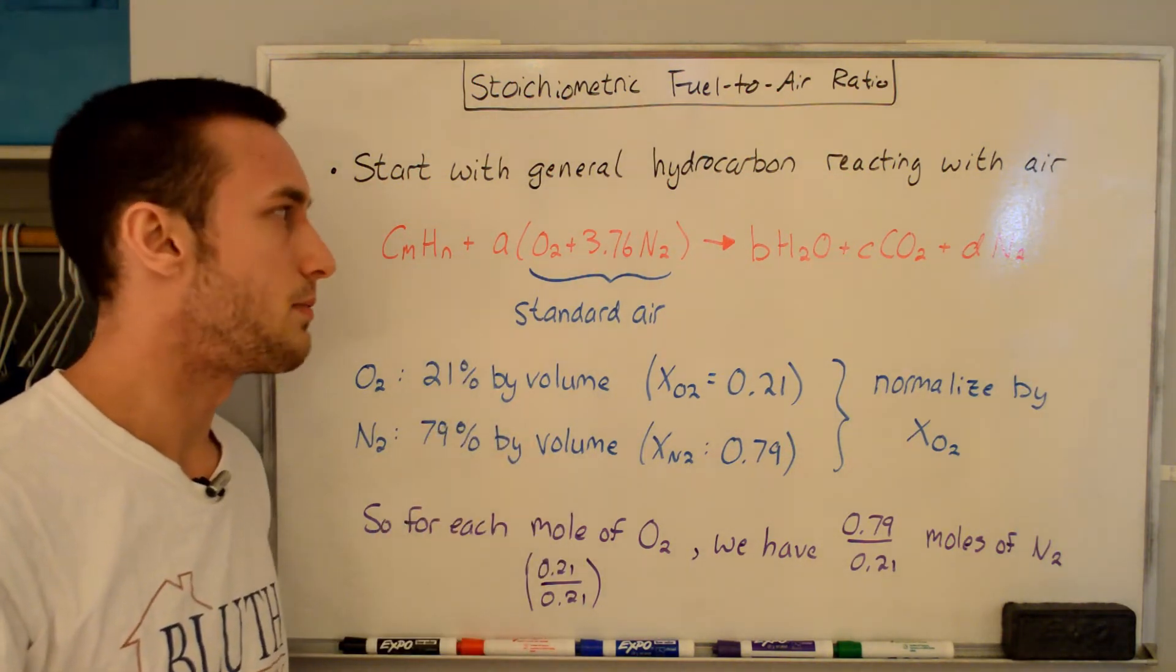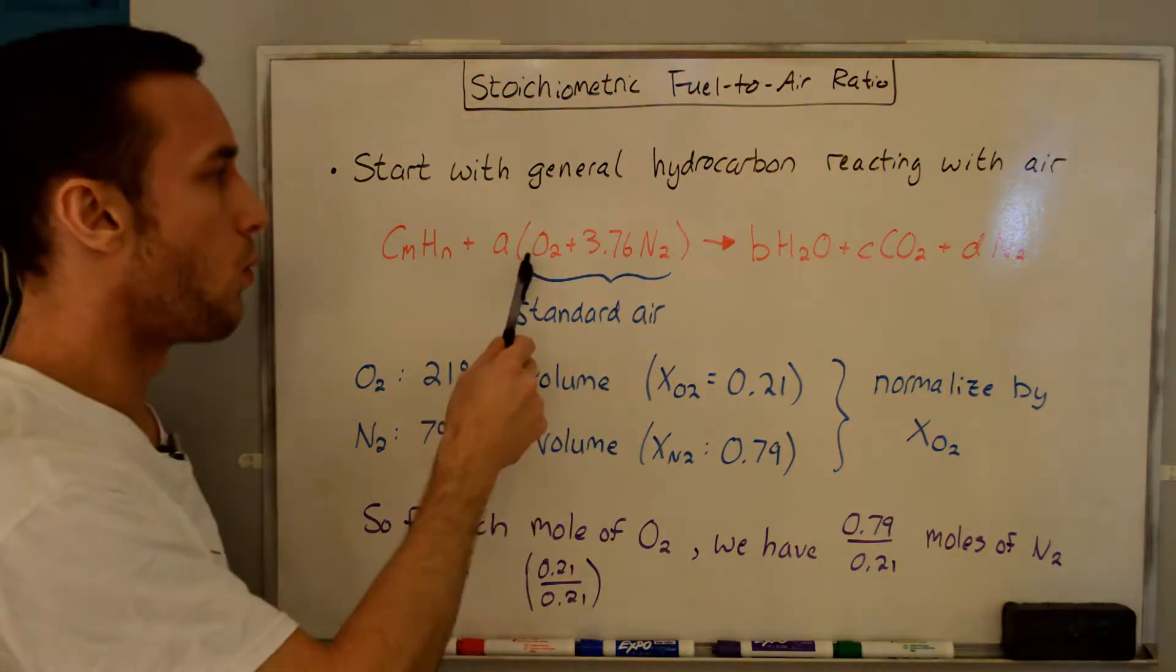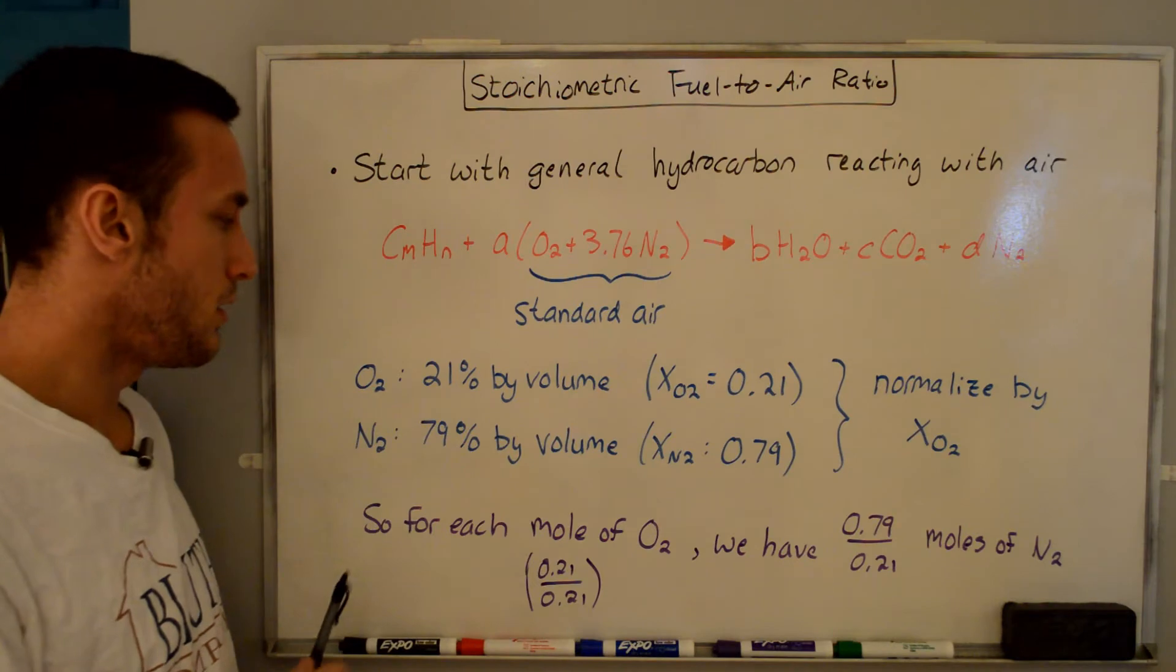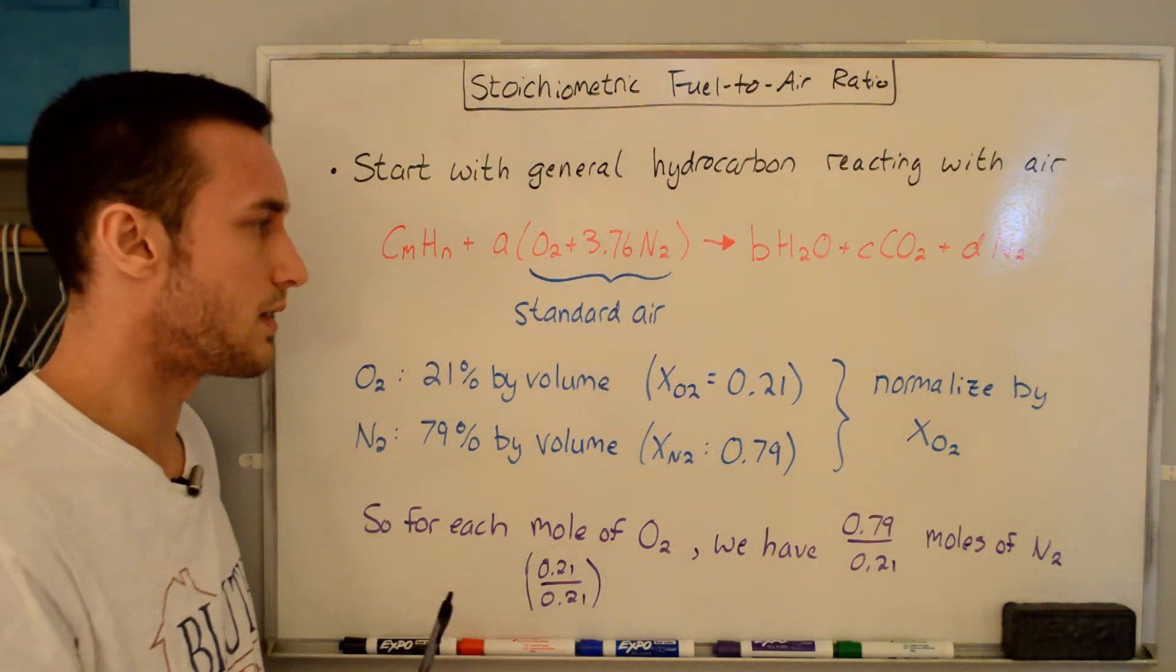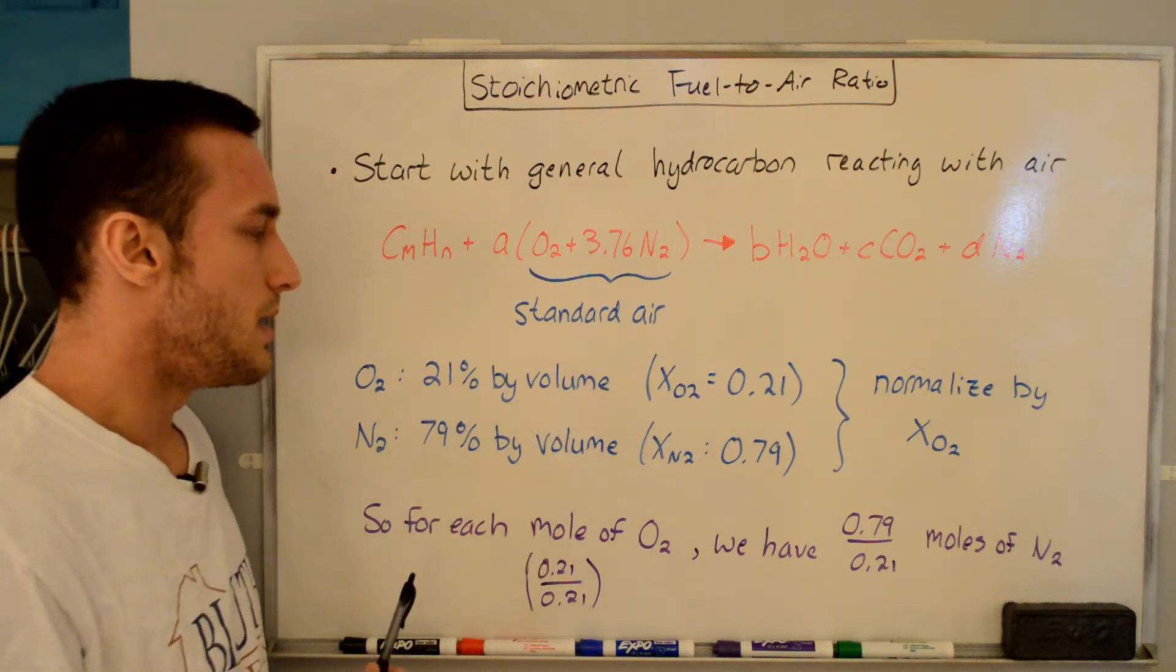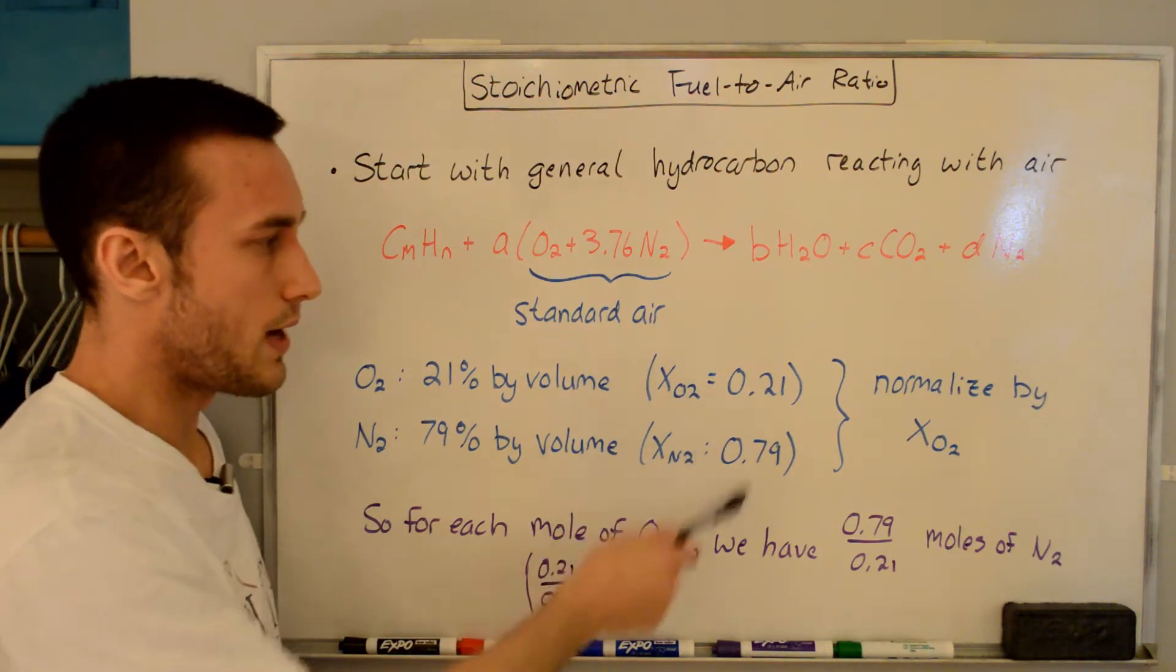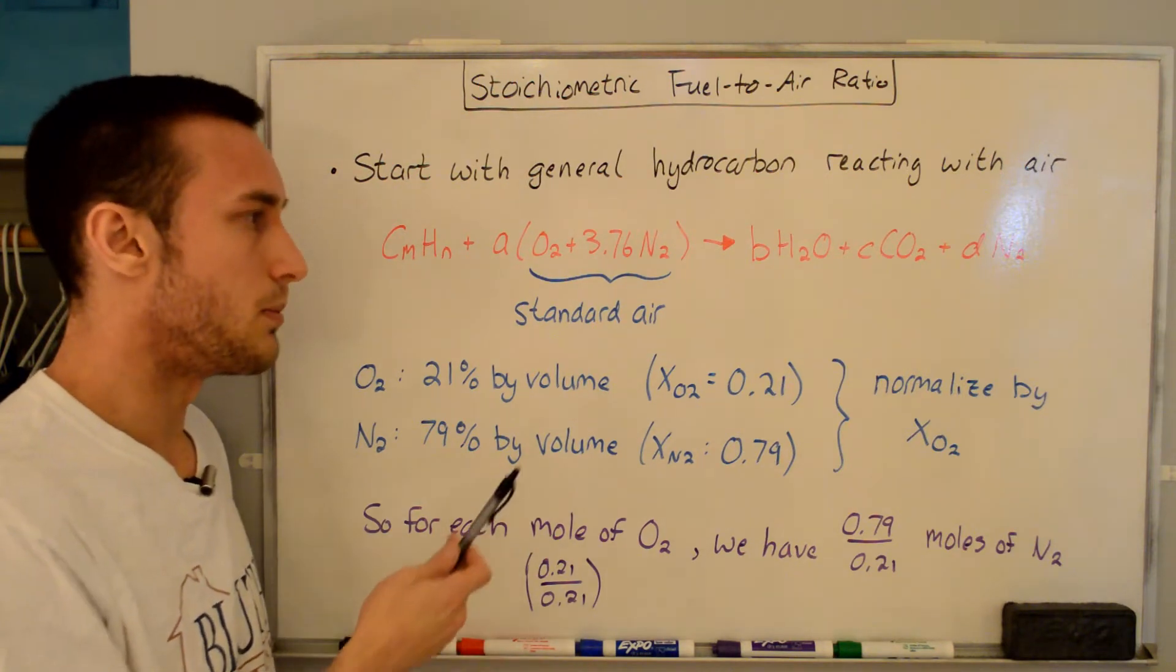Now the first thing that gets glossed over by a lot of people doing explanations on this is the standard air assumption here. So why is it 1O2 plus 3.76N2? Well, we're making the assumption that our air is composed of 21% O2 by volume and 79% N2 by volume, and we're ignoring all the other trace species that are in the actual air. And so when it says by volume, it means you can also express it as a mole fraction. So the mole fraction of O2 in the air is 0.21, and the mole fraction of the N2 in air is 0.79, and these two add up to 1 because the sum of the mole fractions of the air has to add up to be equal to 1.